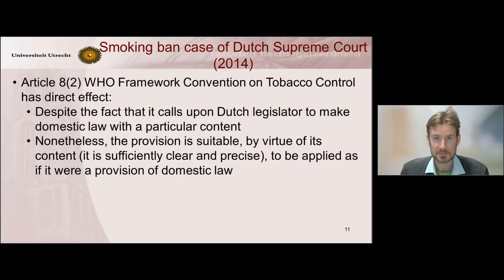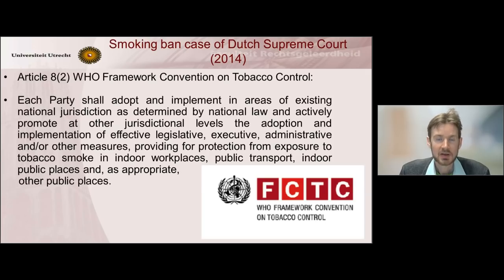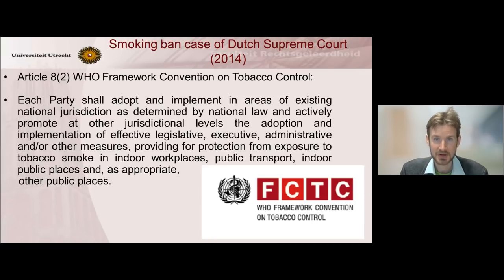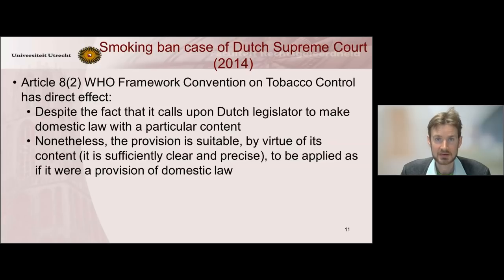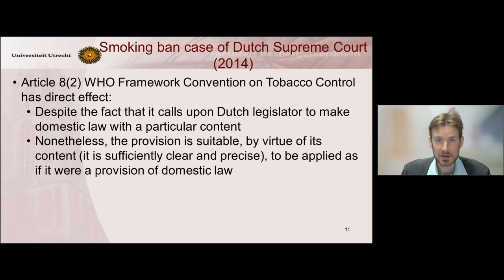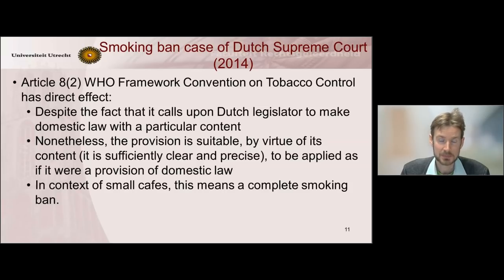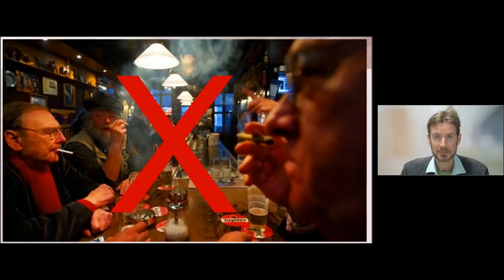It was sufficiently clear and precise in the results that needed to be achieved. Let me show you the provision. Article 8, paragraph 2 called upon the Dutch legislator to make law, but the purpose of this law was so clear — it was to put in place a complete smoking ban — that it left very little discretionary power to the legislator. There was very little policy to be made, and thus the provision was clear and precise enough to be applied and invoked directly before the Dutch courts. And so these small cafes with their smokers — we will see no more of them after the judgment was rendered in 2014. Thank you for your time.